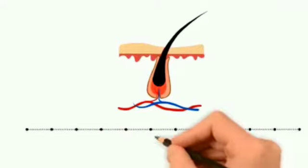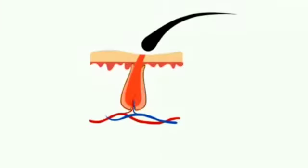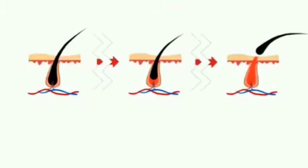The last phase is telogen phase, or resting phase. It is in the telogen phase that the hair is released and falls out. When this hair growth cycle is disrupted, it leads to hair fall.